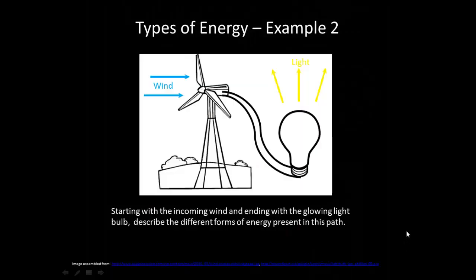Alright, let's do one more example. Consider this picture. Starting with the incoming wind and ending with the glowing light bulb, describe the different forms of energy present in this path. Pause the video and do this.